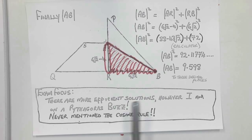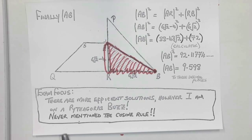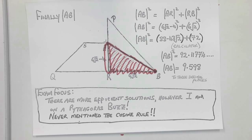Exam focus. There are more efficient solutions. However, genuinely, I'm on the Pythagorean buzz here, and I never mentioned the cosine rule. And if you saw that and it's quicker, well, well done you. I applaud you. Thank you.